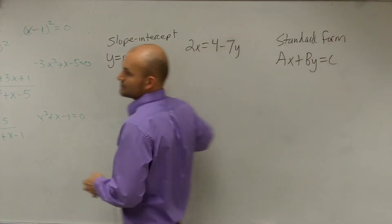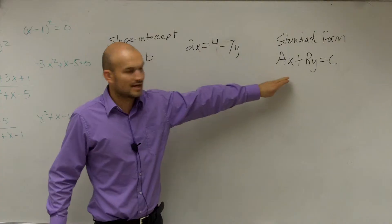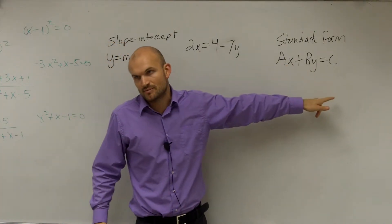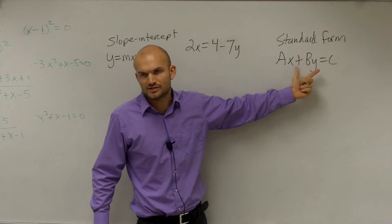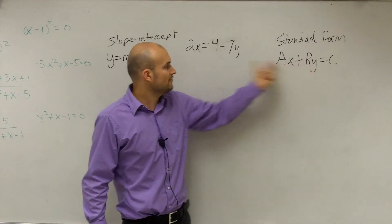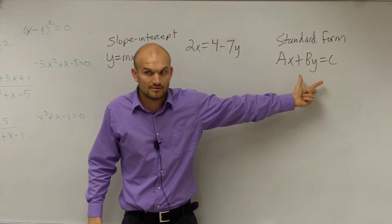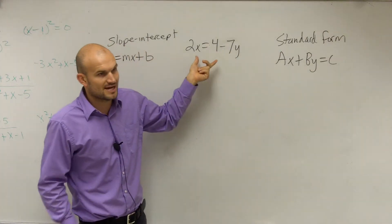So what I want to do is I want to transform this to look like that. So first of all, when you see this, remember A, B, and C represent real numbers. They're your coefficients, C is your constant. So first of all, do I have X and Y? X and Y are on the same side here, right? Do I have X and Y over here on the same side? No. So how do I do that?